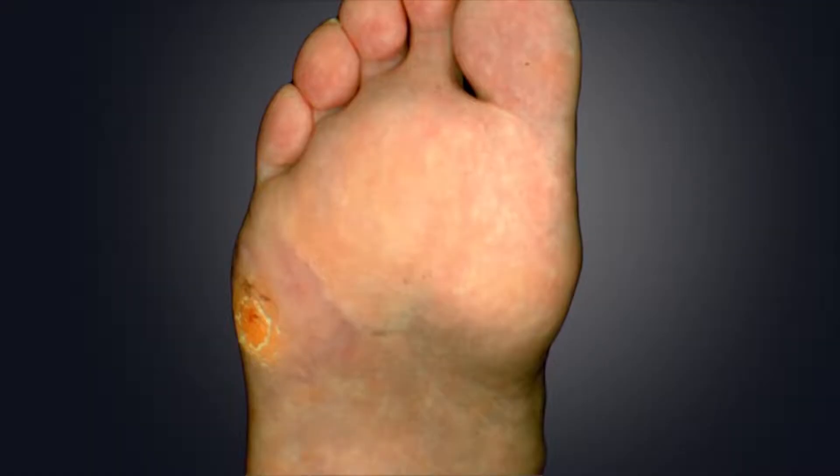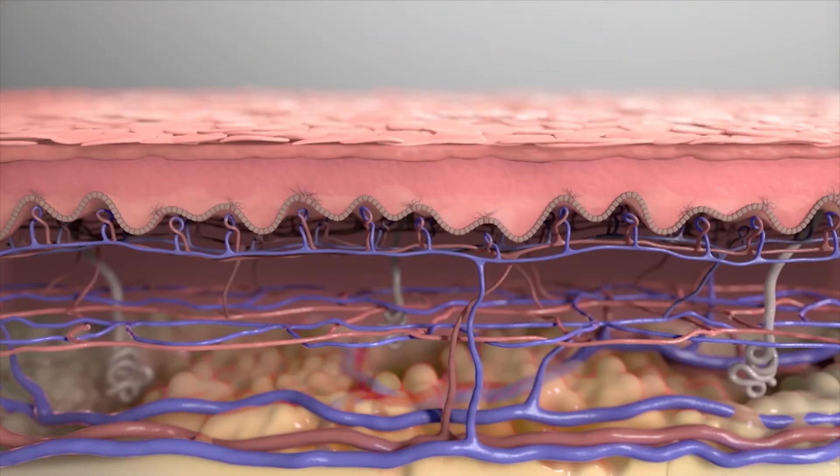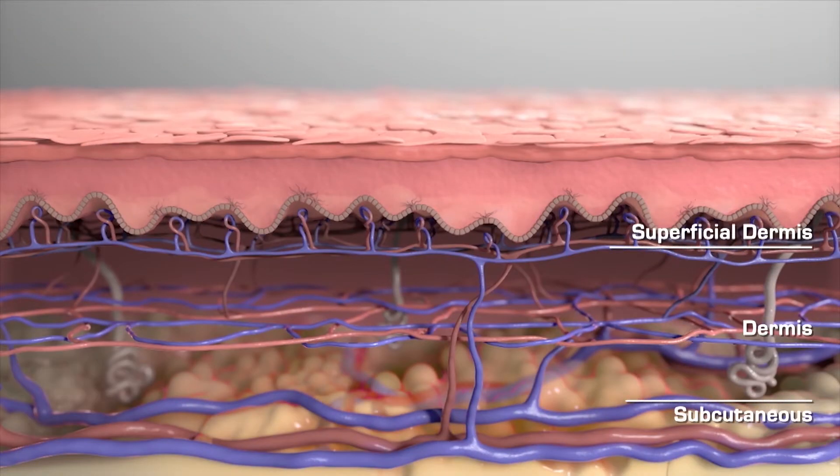Explain what a wound needs to heal, Doctor. The most important thing a wound needs to heal is adequate blood flow, good tissue perfusion. Oxygenated blood needs to get down to the bottom of the foot to heal those wounds.